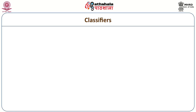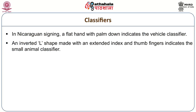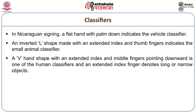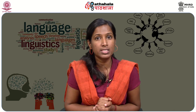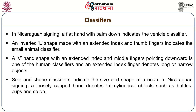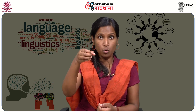In the Nicaraguan signing community, the classifiers include: a flat hand with palm down as the vehicle classifier; an inverted L shape as the small animal classifier; and a V hand shape pointing downward as the human classifier. For size and shape classifiers, an extended index finger denotes long or narrow objects, and a loosely cupped hand denotes tall cylindrical objects such as bottles, cups, etc.